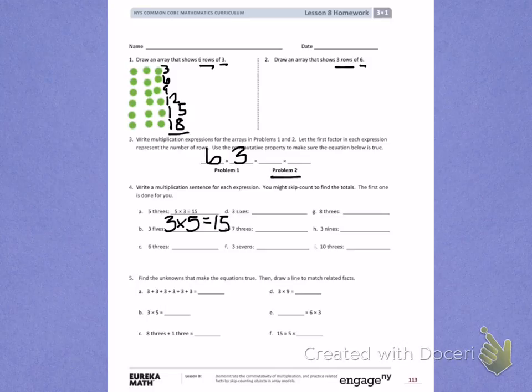Letter C. 6 threes. That tells me I have 6 groups of 3 or 6 times 3. To help me, I'm going to count by threes 6 times. 3, 6, 9, 12, 15, 18.